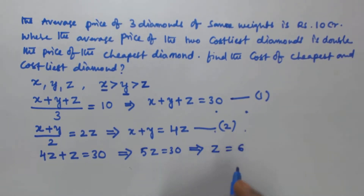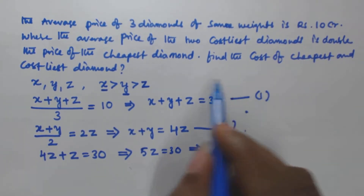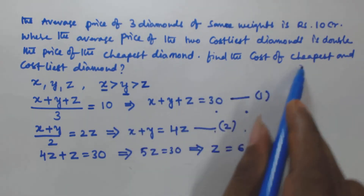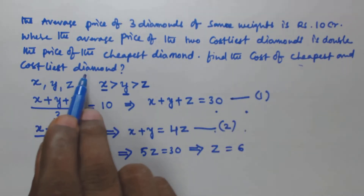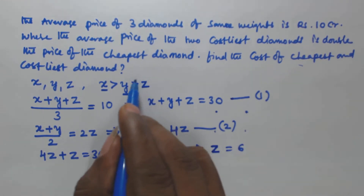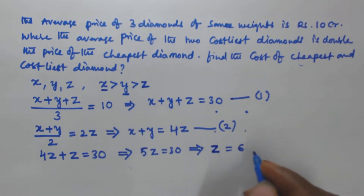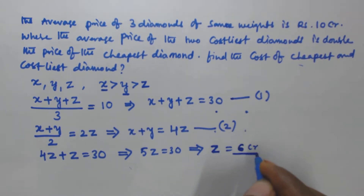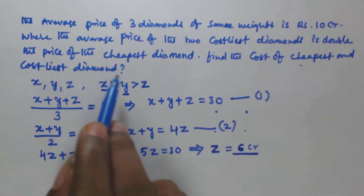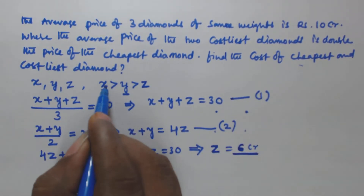From 5z = 30, we get z = 6. Since z is the cost of the cheapest diamond, the cost of the cheapest diamond is 6 crores.